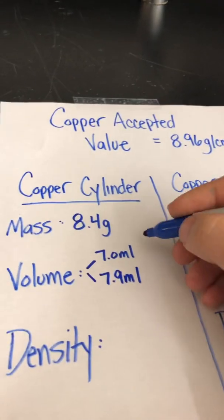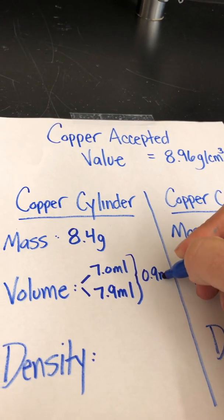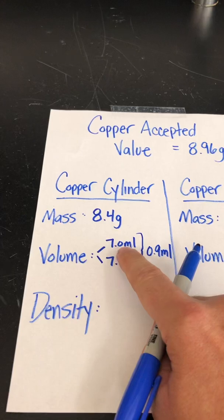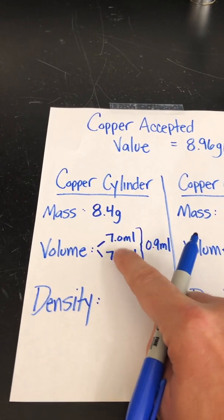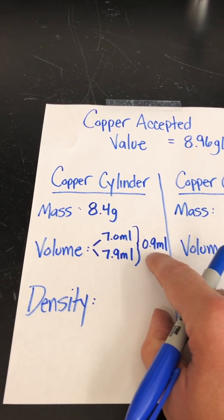So what that turns out to be is a 0.9 milliliter volume. Because with water displacement, you take the beginning value of the water level, you take the ending value of the water level, subtract them, and that turns out to be 0.9 milliliters.